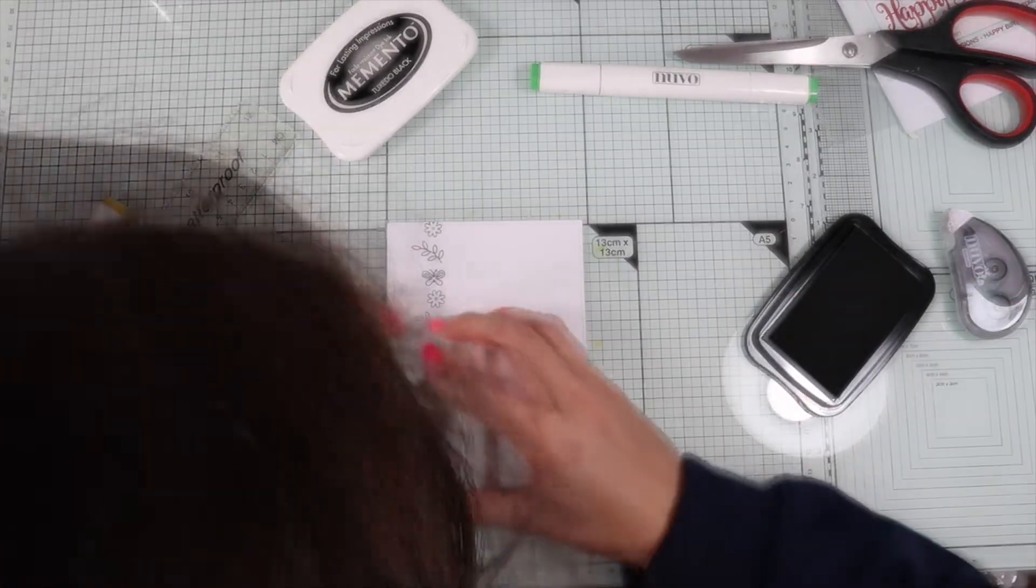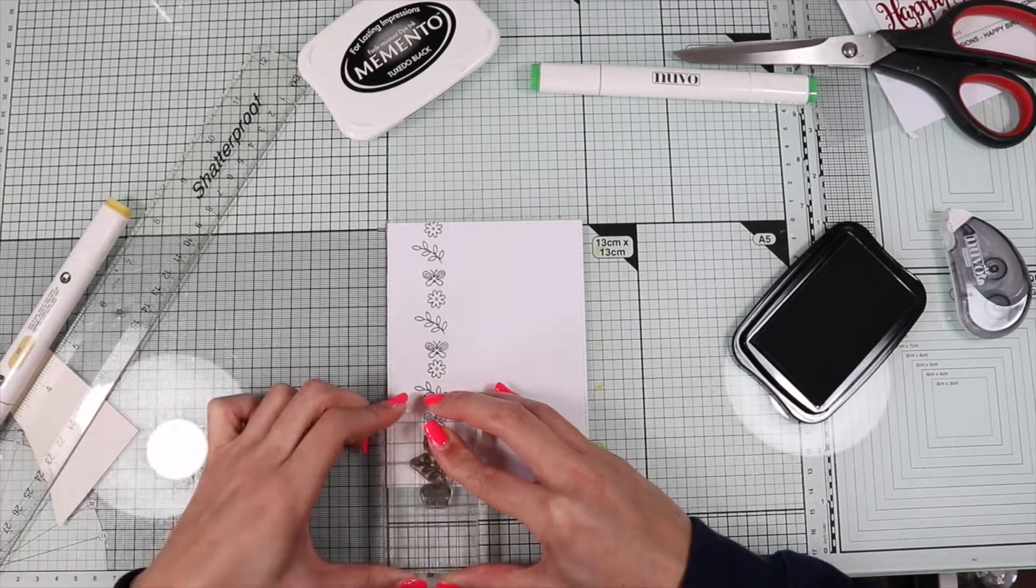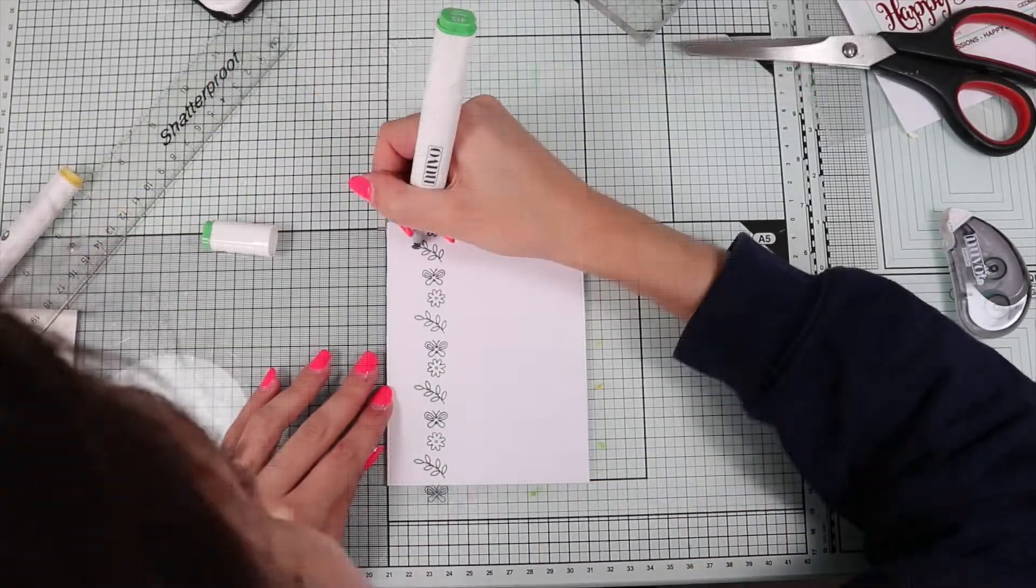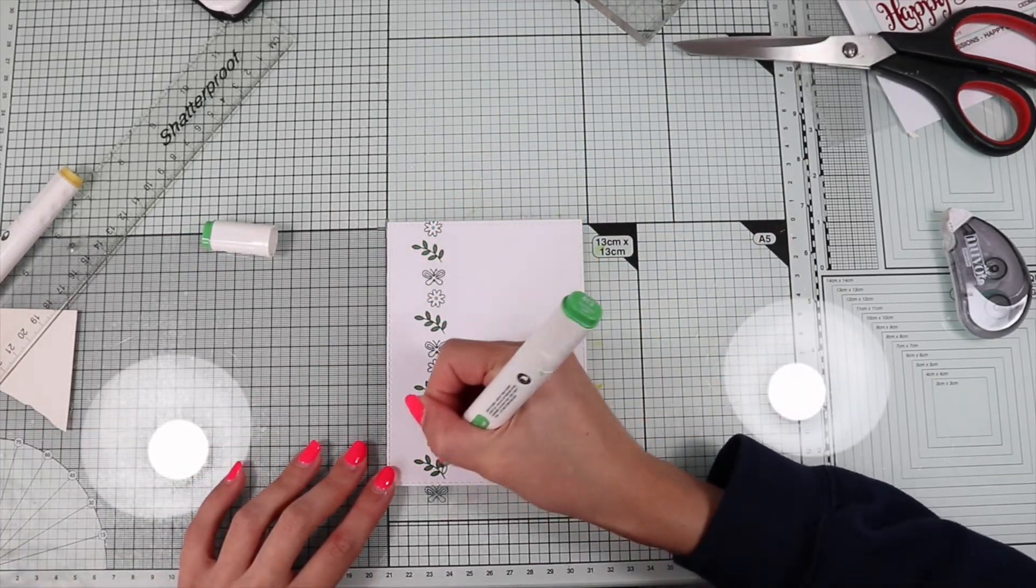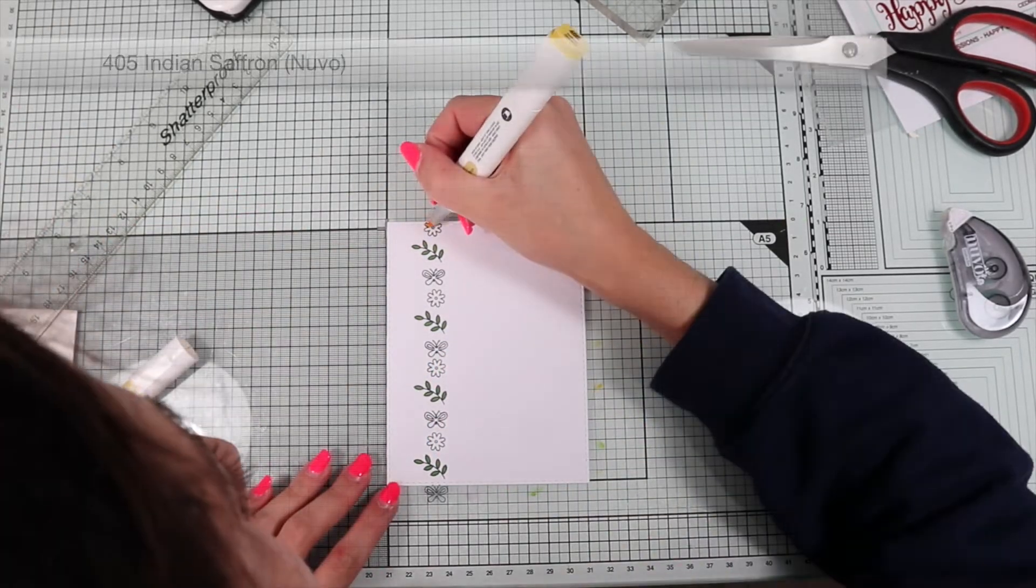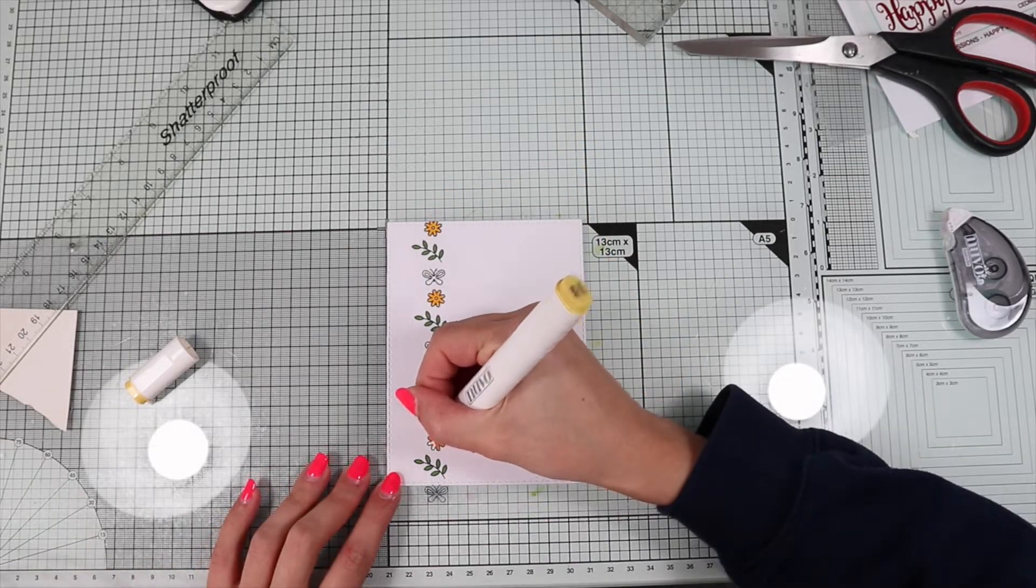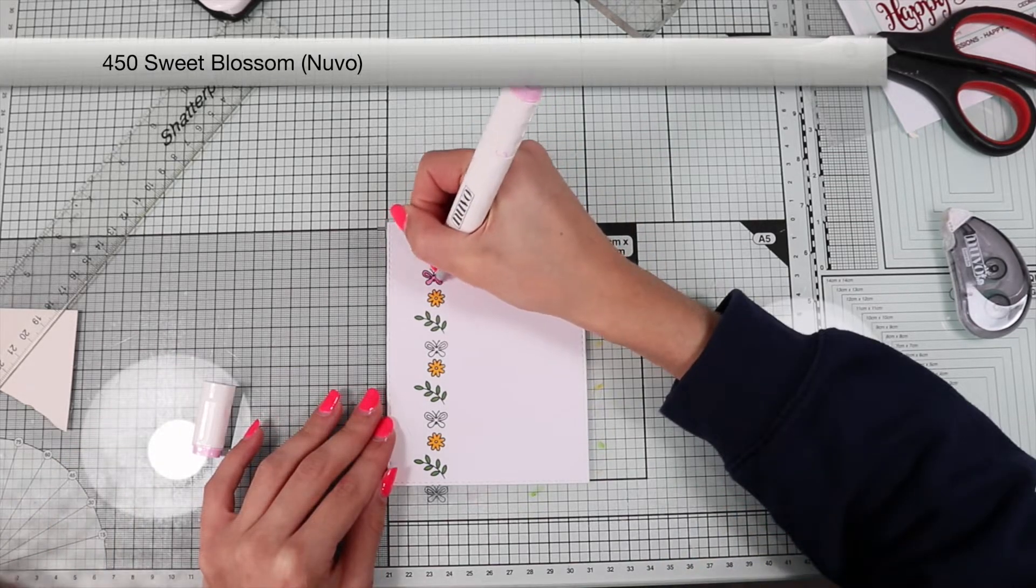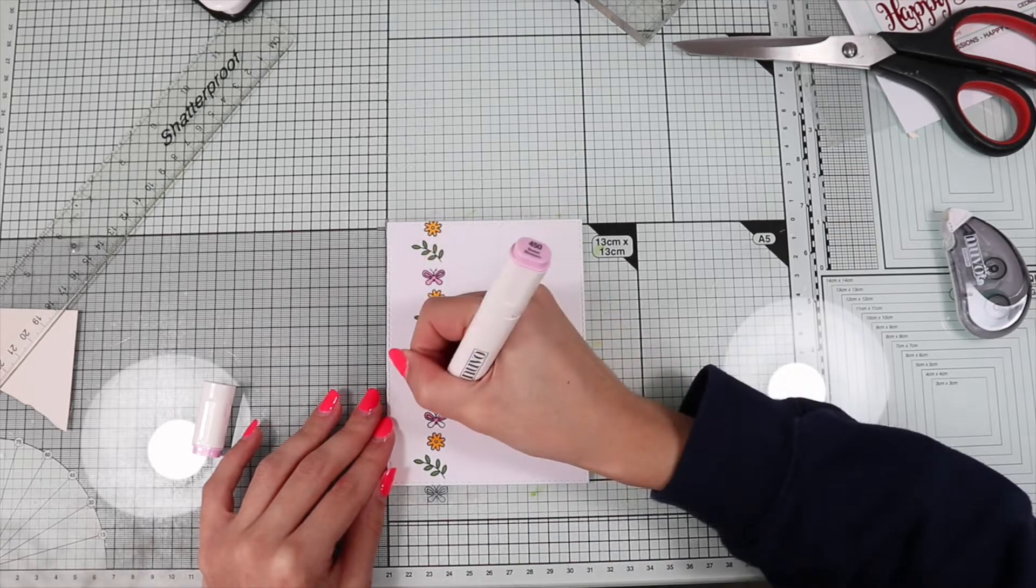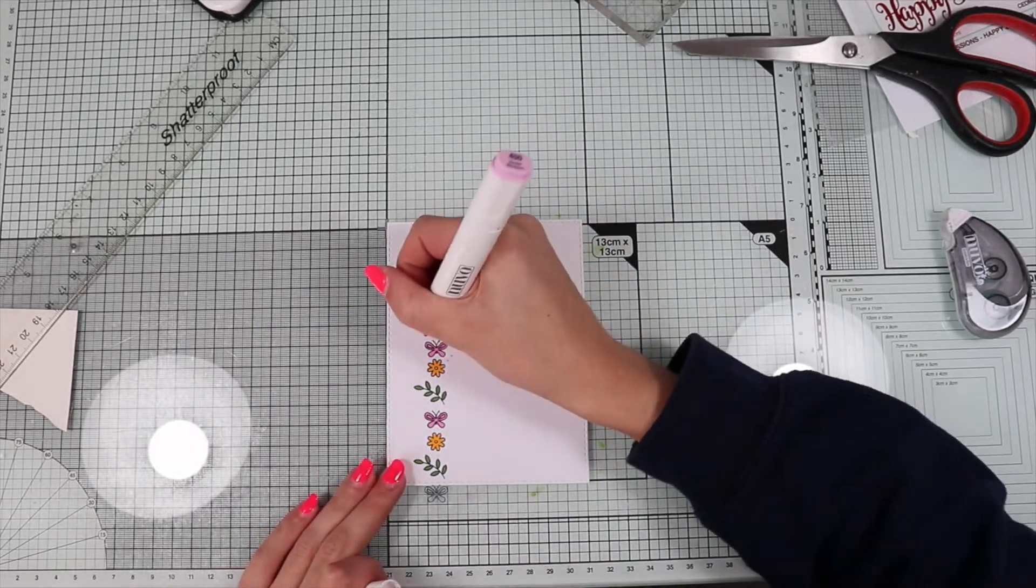I use this ink because it is alcohol friendly, so I can color the images with the markers. Once it is dry, I proceed to color with the three markers included in the kit. I'm using green for the leaves, yellow for the flowers, and pink for the butterflies. Finally, I'm going to add the decorative dots here and there.